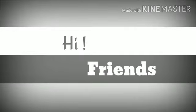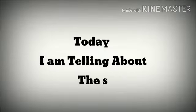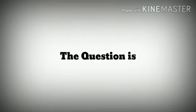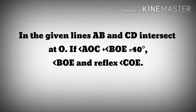Hi friends, today I am telling about the solution of the problem. The question is: in the given lines AB and CD intersect at O. If angle AOC plus angle BOE is equal to 70 degrees, find angle BOE and reflex angle COE.